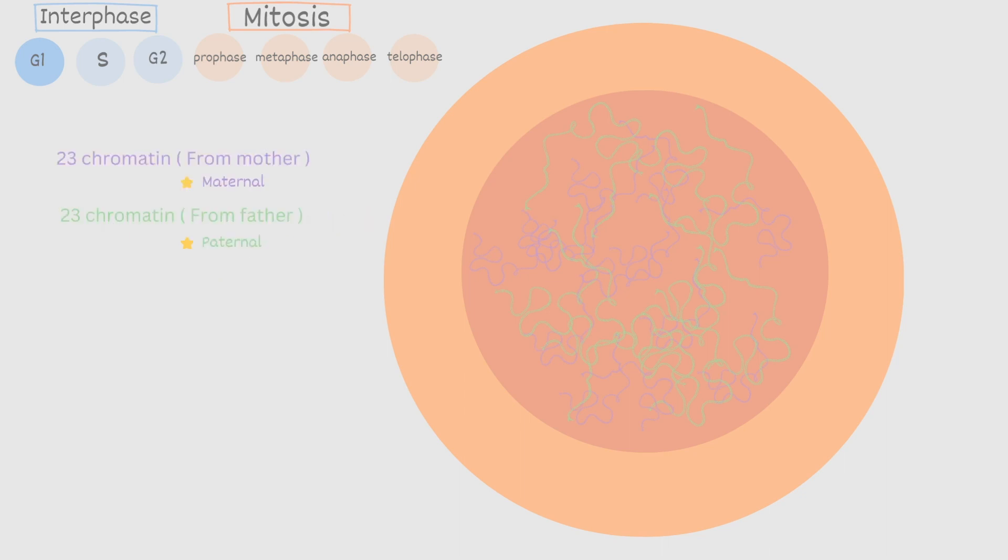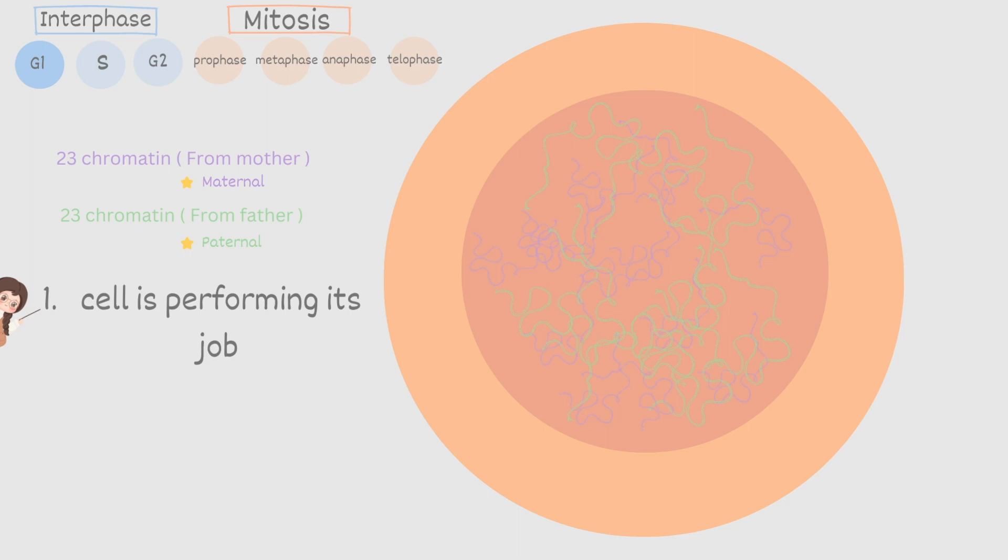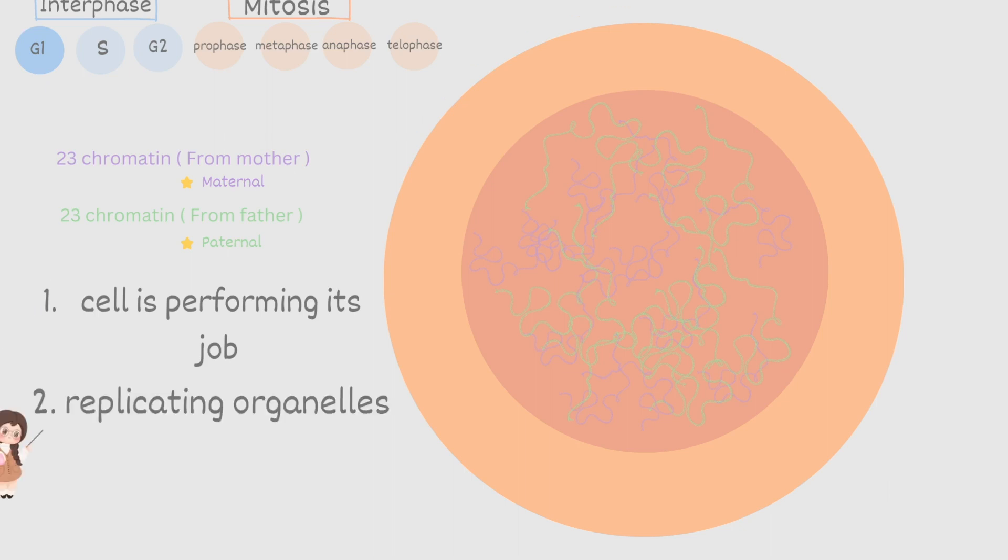The first major thing that happens in G1 or gap one is the cell is performing its normal tasks. So it's basically just doing its normal job it's meant to do. The second thing is it begins to replicate organelles. It needs to replicate organelles and everything else within the cell because eventually this parent cell is going to split into two cells. These two cells are called the daughter cells and these daughter cells need to be identical to the parent cell. So every organelle within the cell must be duplicated so both cells get equal amounts.